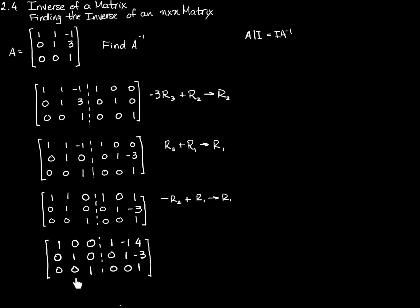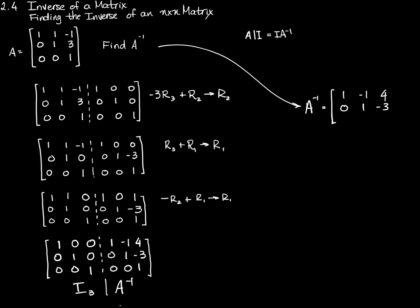Now on the left-hand side I have the identity matrix I sub 3, and therefore what I have on the right-hand side is A inverse. So A inverse is the matrix: 1, negative 1, 4; 0, 1, negative 3; 0, 0, 1. We can confirm that by computing A times A inverse, which is the matrix 1, 1, negative 1; 0, 1, 3; 0, 0, 1 multiplied by 1, negative 1, 4; 0, 1, negative 3; 0, 0, 1.